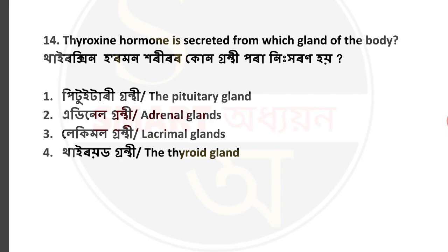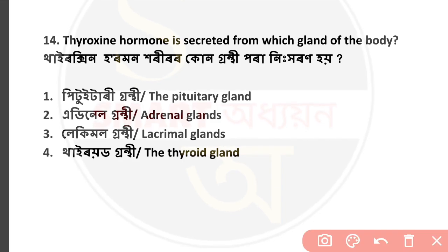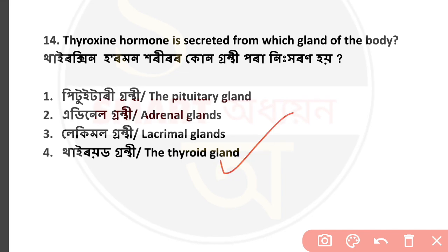Question number 14: Thyroxine hormone is secreted from which gland of the body? Thyroxine hormone is secreted from the thyroid gland. Option number 4 is correct — the thyroid gland.